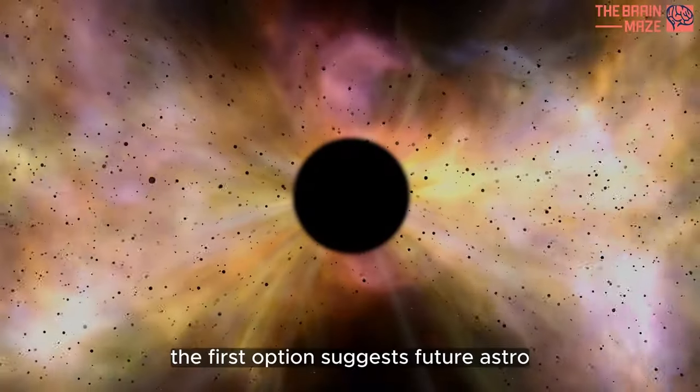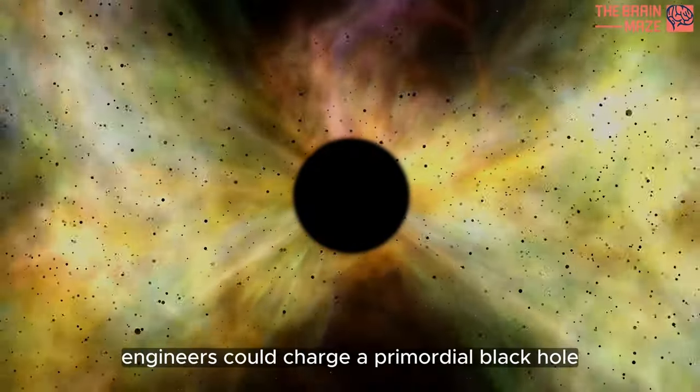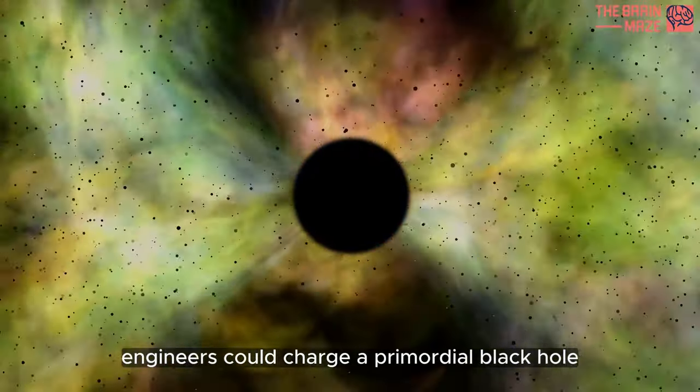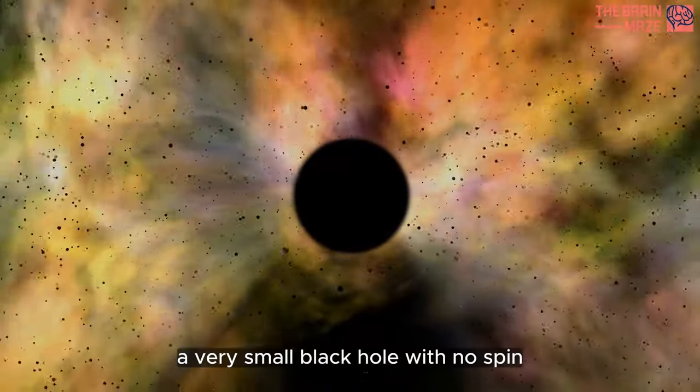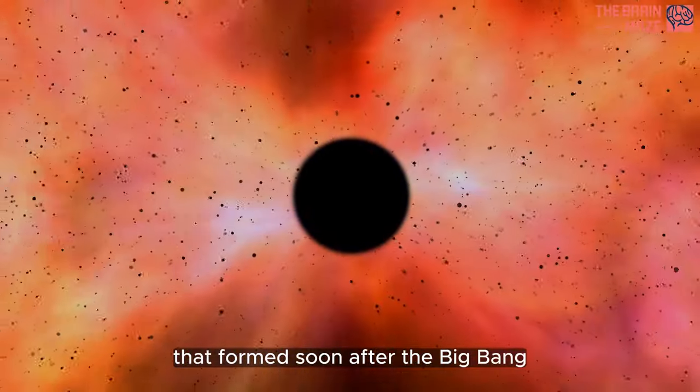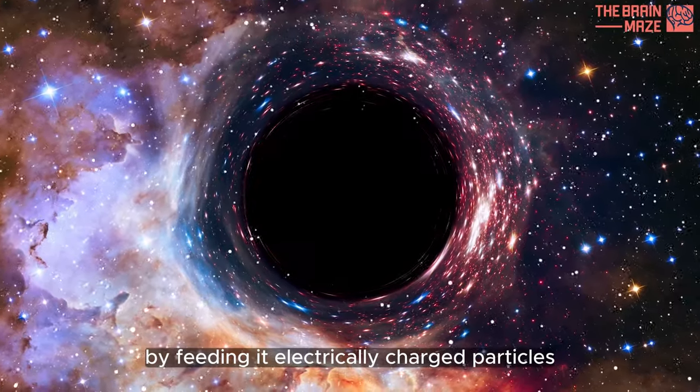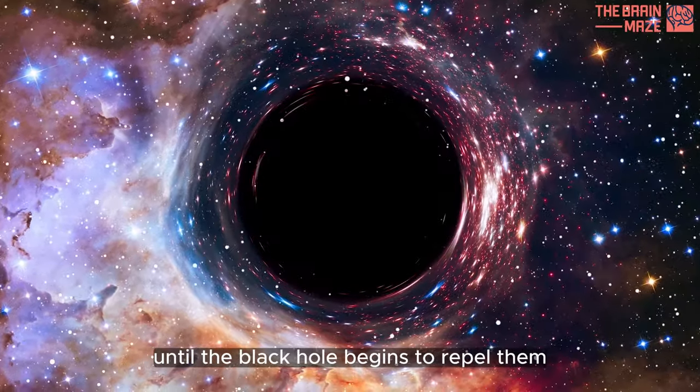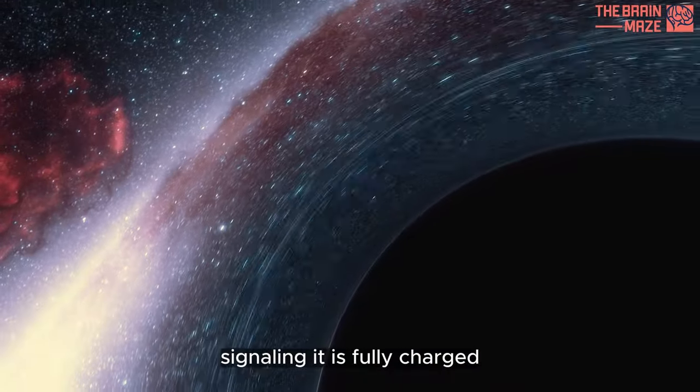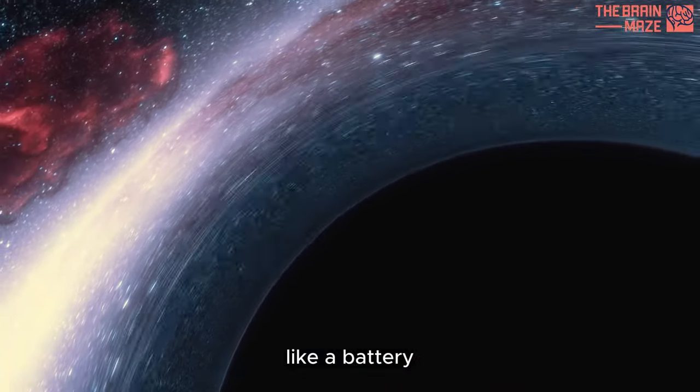The first option suggests future astro engineers could charge a primordial black hole, a very small black hole with no spin that formed soon after the Big Bang, by feeding it electrically charged particles until the black hole begins to repel them, signaling it is fully charged, like a battery.